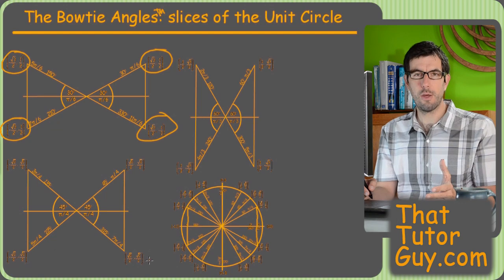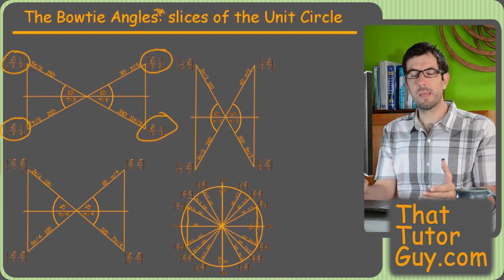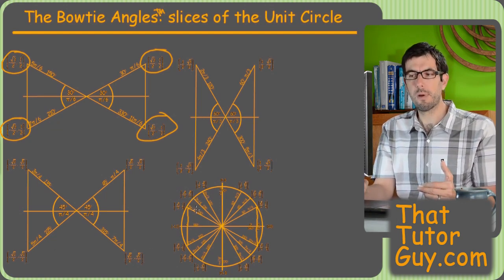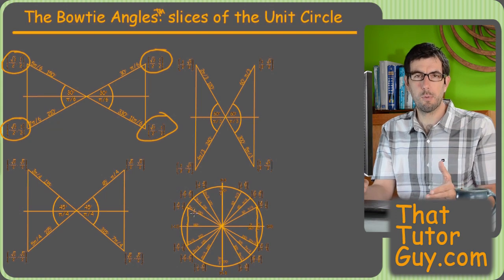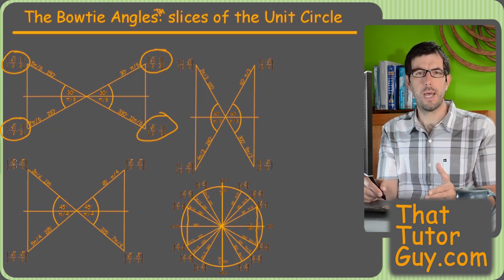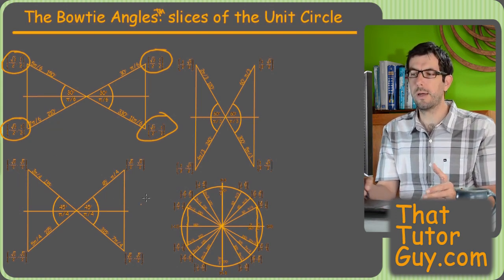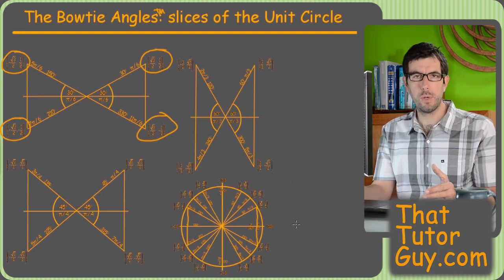Then they're like, oh, Eureka, now I understand all the 45s. And then when they went to think about anything with a 45 degree reference angle, they sort of knew what the sine and cosine would be, because they were sort of picturing the bowtie in their mind instead of picturing this giant cluttered, spoked unit circle wheel.